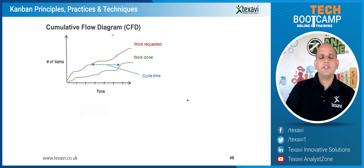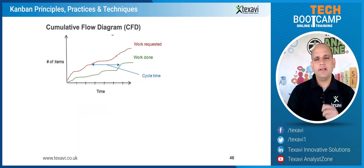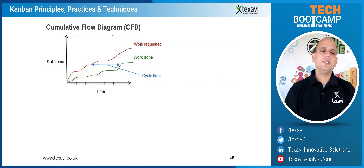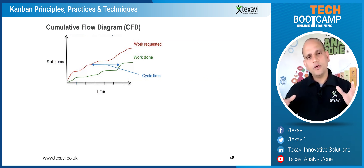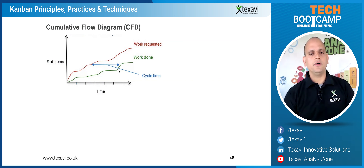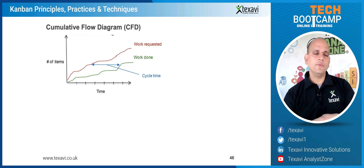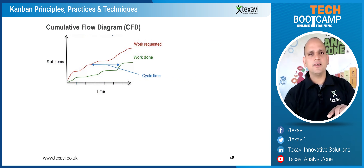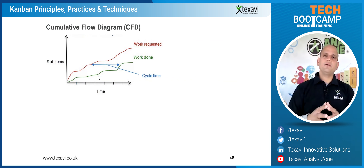Another important artifact of Kanban is the Cumulative Flow Diagram (CFD). An equivalent in Scrum is the burndown chart — the sprint burndown chart. The burndown chart shows work still to be completed, going from top-left to bottom-right. The CFD in Kanban is slightly different — it's an opposite or different way of looking at the same concept.